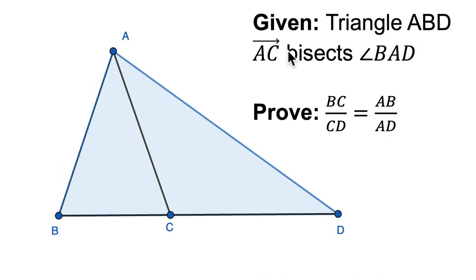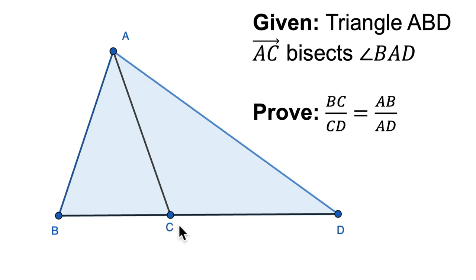Let's do one more. This one is called the angle bisector theorem. Triangle ABD — here's A, B, and D — and we're told that AC bisects angle BAD. It's bisecting this angle up here. Interestingly, if we're given that setup, it turns out the ratio of BC to CD — the side crossed by the bisected angle — equals the ratio of AB to AD. That is not at all intuitive — it's a shocking result. BC to CD equals AB to AD.